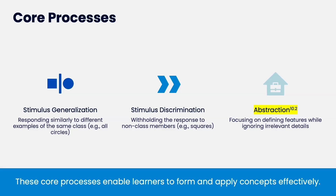Stimulus generalization is when you're responding to a stimulus in a certain way, and you behave the same way when you see a similar stimulus. It's pretty much the opposite of stimulus discrimination — knowing to do something with this stimulus and not with another. Abstraction is another core process in concept formation, focusing on defining the features that make something a concept.